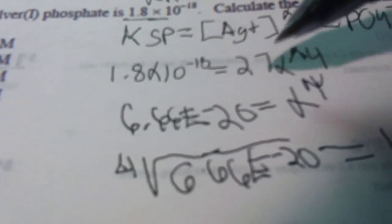And then to get x⁴ on one side of the equation, you would just move the 27. So it would be 1.8 × 10⁻¹⁸ divided by 27.